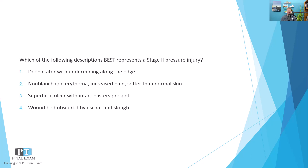Number one: deep crater with undermining along the edge. Two: non-blanchable erythema, increased pain, softer than normal skin. Number three: superficial ulcer with intact blisters present. And four: wound bed obscured by eschar and slough.